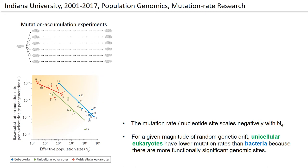We've done this work now with about 50 different species across the tree of life. The basic take-home is that the mutation rate per nucleotide site scales negatively with the effective population size of the species. For a given magnitude of random genetic drift, unicellular eukaryotes have lower mutation rates than bacteria do. This is quite consistent with theory, which tells us that natural selection should be operating on the mutation rate from the standpoint of the total amount of functional DNA in a genome, not on the basis of single nucleotide sites.